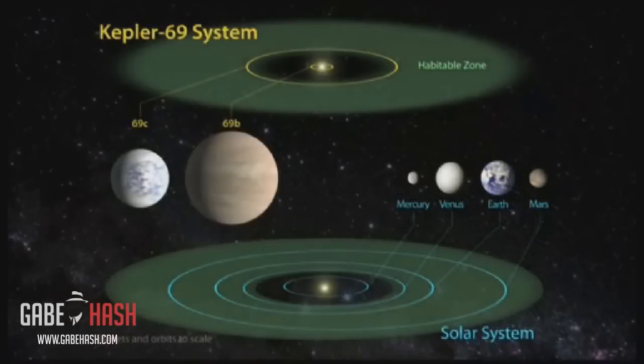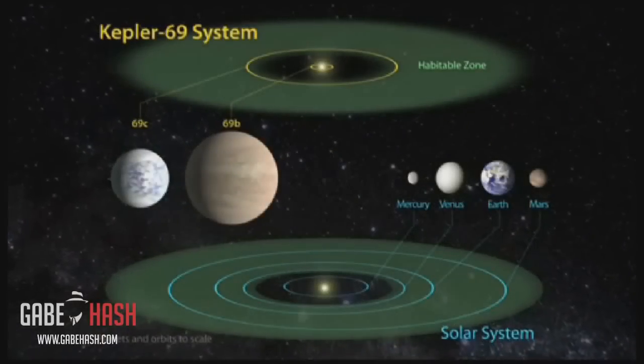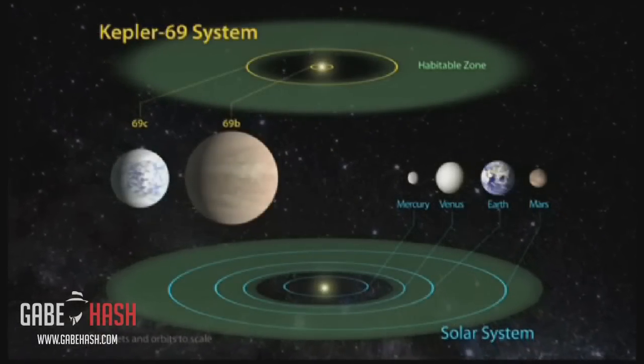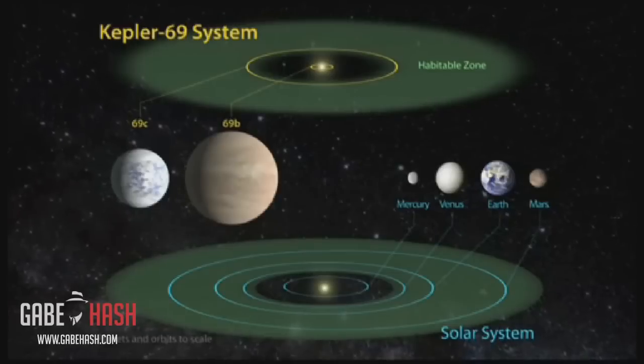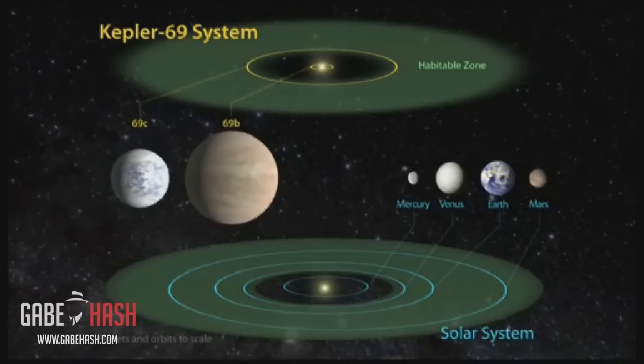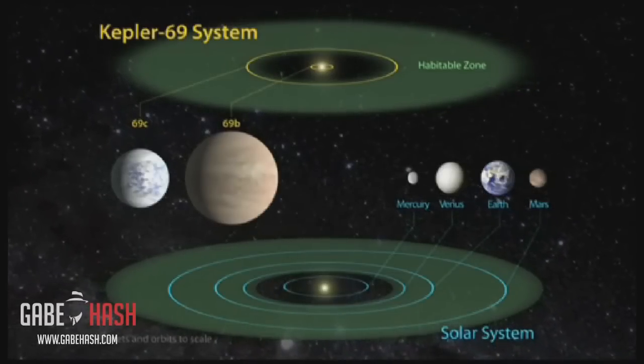The inner planet, Kepler-69b, is 2.2 times the size of Earth and orbits every 13 days. It is much hotter and closer to its star than the planet Mercury is to the Sun.